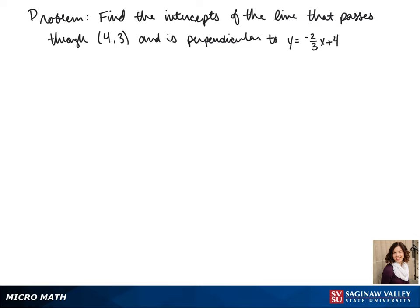Welcome to another day of algebra. Today we'll be finding the intercepts of the line that passes through (4,3) and is perpendicular to y equals negative 2 thirds x plus 4.